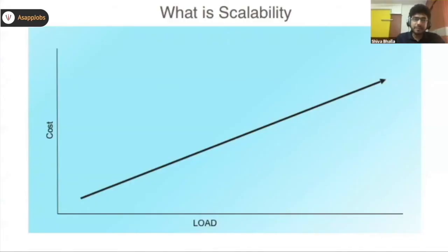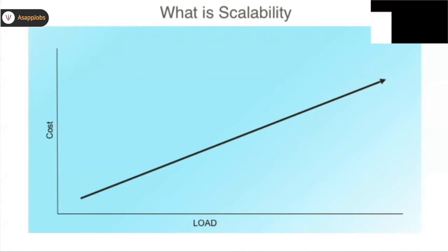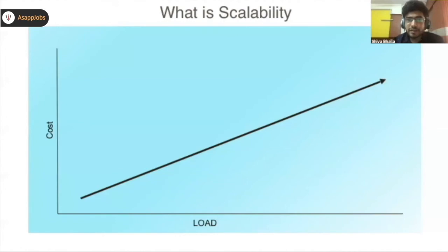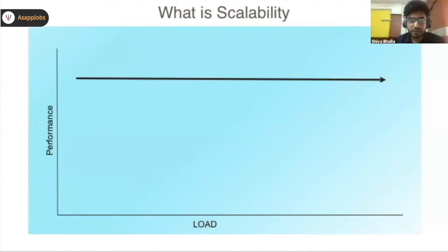Cost is expected to increase as load increases. This cost comes from adding more servers or using better servers. But it's not only server cost — when your load increases, users expect better features, and since more load is coming you need more workforce and more employees, which also factors into cost. So the two basic graphs for scalability are: performance should remain constant with load, whereas cost should increase proportionally to load.